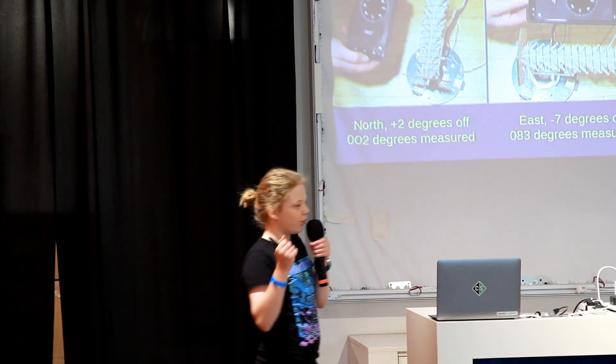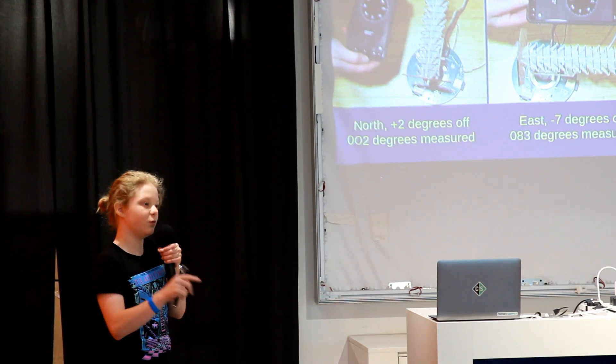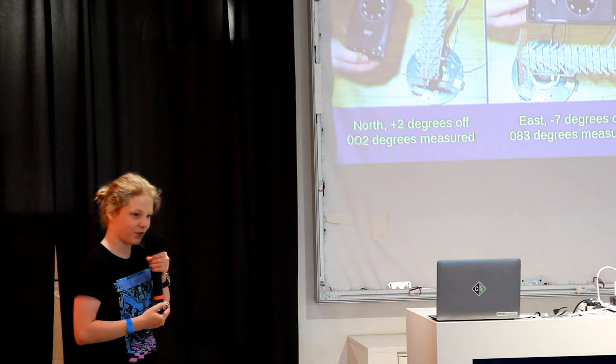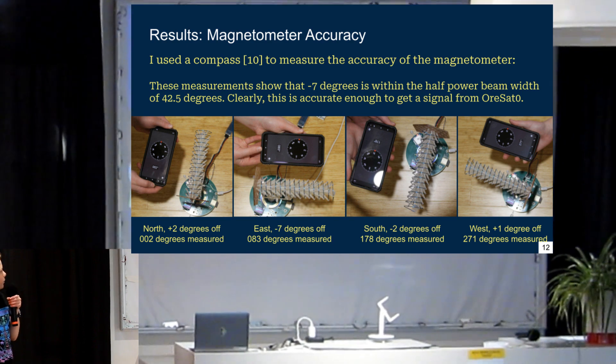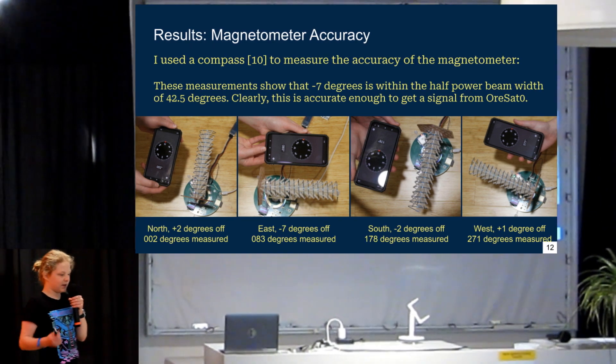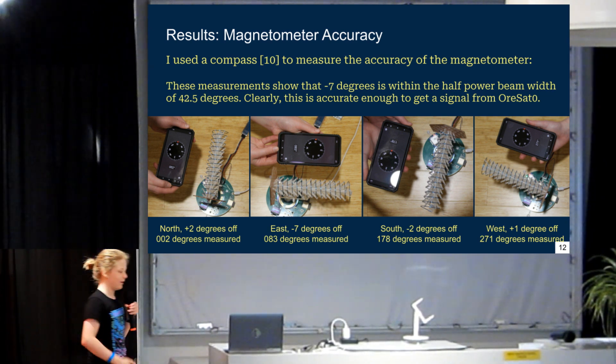And because I am good there, I wanted to make sure my magnetometer is accurate to 42.5 degrees. So, I used a compass to measure the accuracy of the magnetometer, and my highest error was 7 degrees off pointed east. And that is way less than 42.5, so we should be good there.